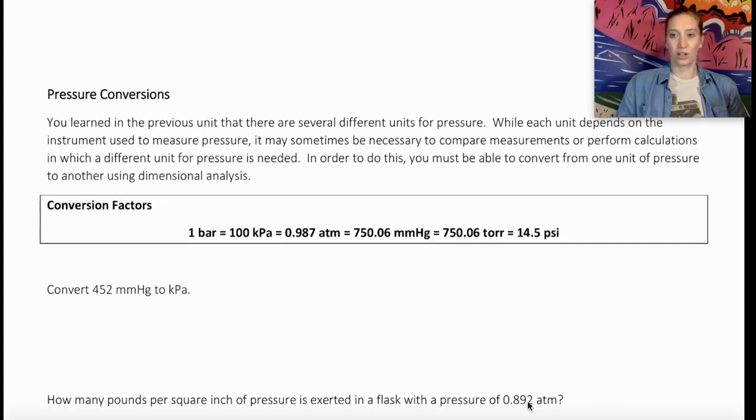So we've already learned how to do conversions, and that method is not going to change. We're still going to use our conversion factors as proportions to help us solve from one unit of measure to another. The difference here is going to be the conversion factors that we used. In unit one, we just looked at metric conversions, which are pretty simple in terms that our conversion factors were all based on powers of tens. Here, our different units of pressure measurement are going to have different conversion factors based on the instruments they're used to measure that pressure.